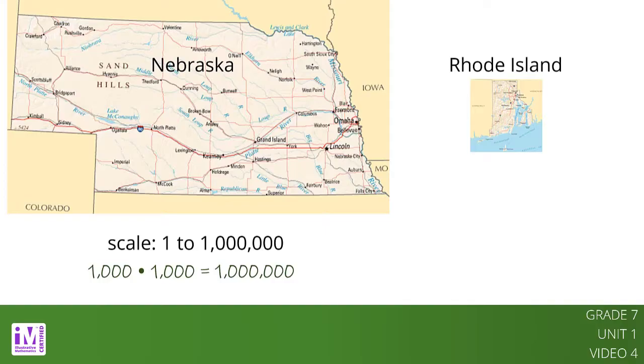The map of Rhode Island has a scale of 1 inch to 10 miles. There are 12 inches in 1 foot and there are 5,280 feet in 1 mile. The scale says that 1 inch represents 10 miles. So multiplying these numbers tells us that there are 633,600 inches in 10 miles. Therefore, the scale of the map of Rhode Island without units is 1 to 633,600.